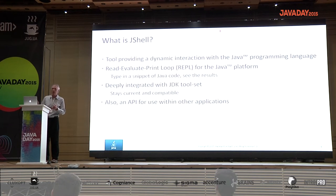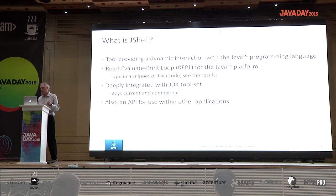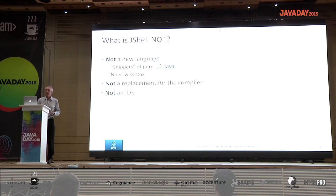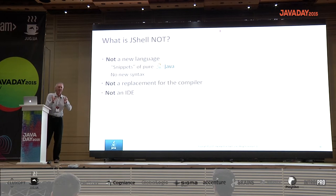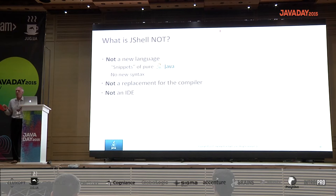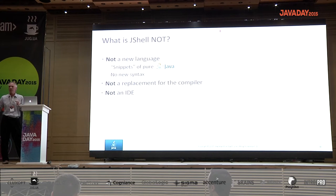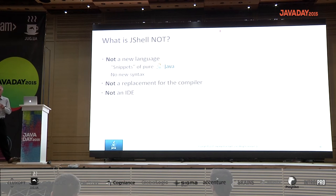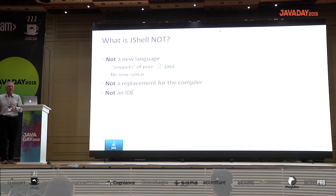I'll be doing another talk tomorrow to get into the API; this talk will be about the tool itself. It's important to talk about what JShell is not. People sometimes think it is or want it to be something different. It's not a new language. The whole point of JShell is interactive access to pure Java code. There's no new syntax — everything you can type to JShell is a valid production in the Java language specification.